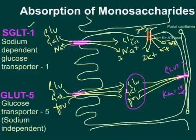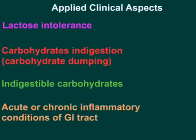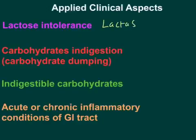SGLT1 and GLUT5 together ensure efficient absorption of monosaccharides. Now let's look at some applied clinical aspects related to absorption of monosaccharides and digestion of carbohydrates. If there is any defect in enzymes involved in carbohydrate digestion, it can lead to intolerance. For example, a deficiency or defect in lactase enzyme gives rise to lactose intolerance.